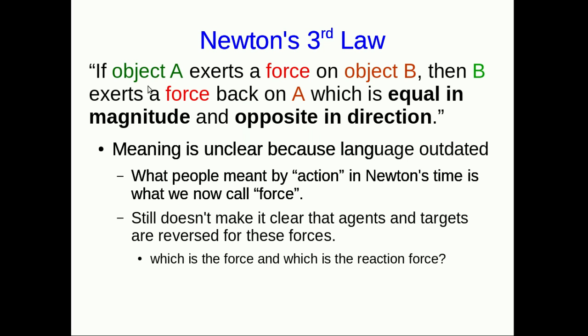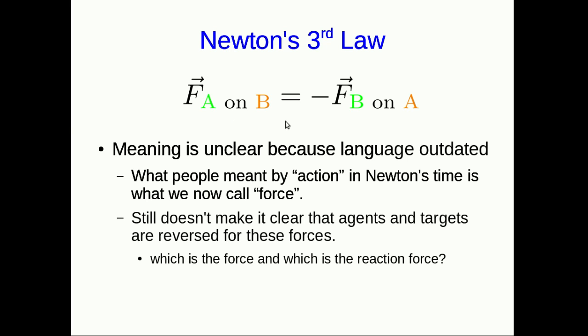So here's a more modern statement. If object A exerts a force on object B, then B exerts a force back on A, which is equal in magnitude and opposite in direction. Well that doesn't roll off the tongue quite as nicely as Newton's original statement. If you want a nice brief pithy statement, you go to the mathematical one like this. Now it's clear the force that A exerts on B is of the same magnitude as the force that B exerts on A, and this negative sign is saying that the force vectors point in opposite directions.